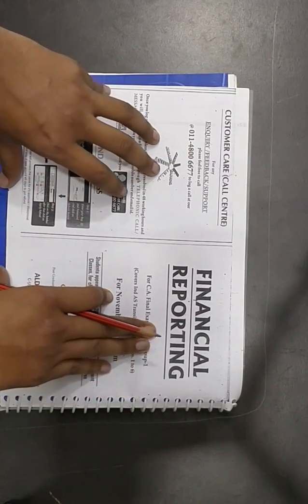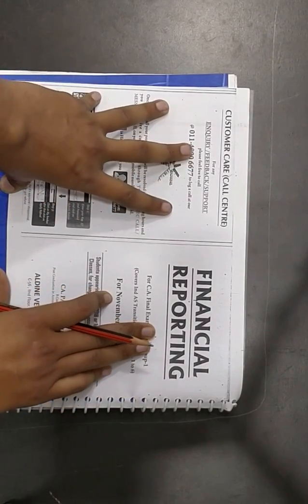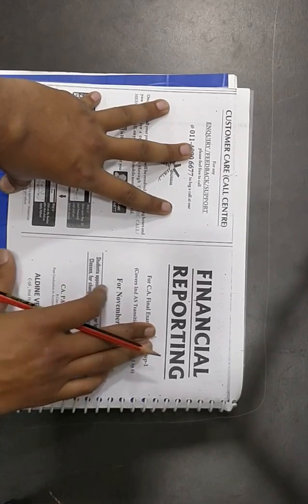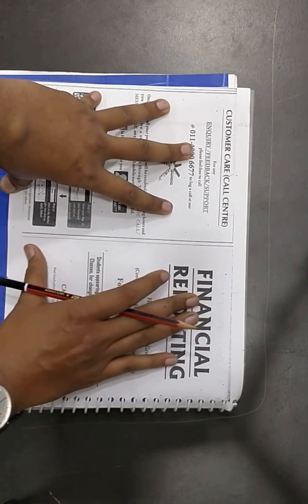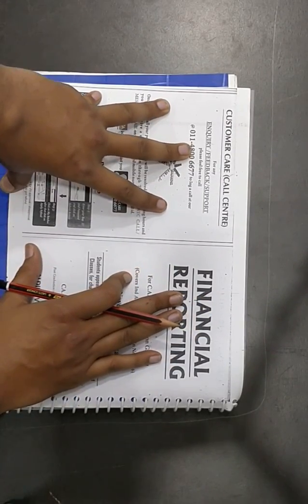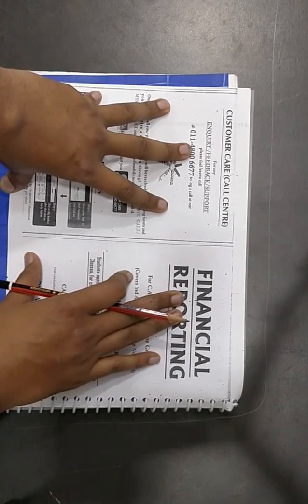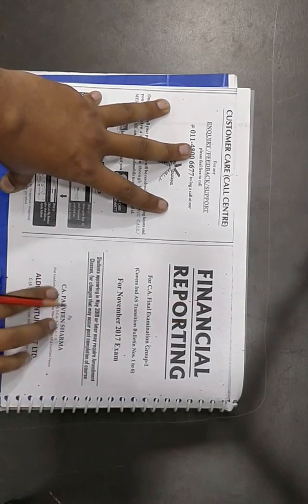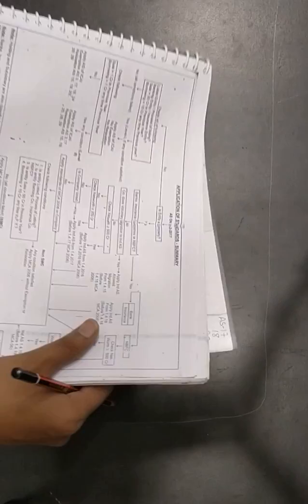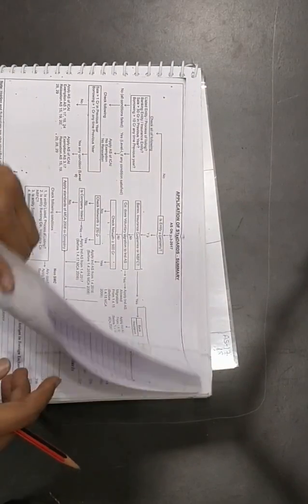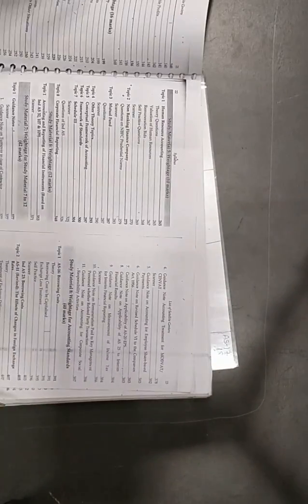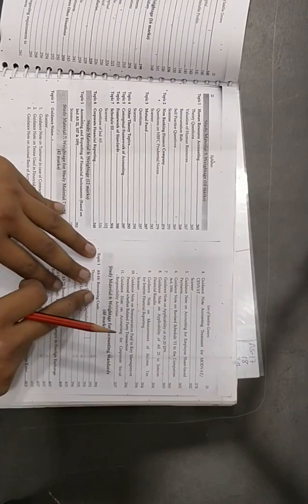How much weightage does it have in an examination? CA final financial reporting paper number one. I'm using the book of financial reporting referred by our well-renowned faculty Mr. Paveen Sharma, and I'll just show you the weightage of the marks.